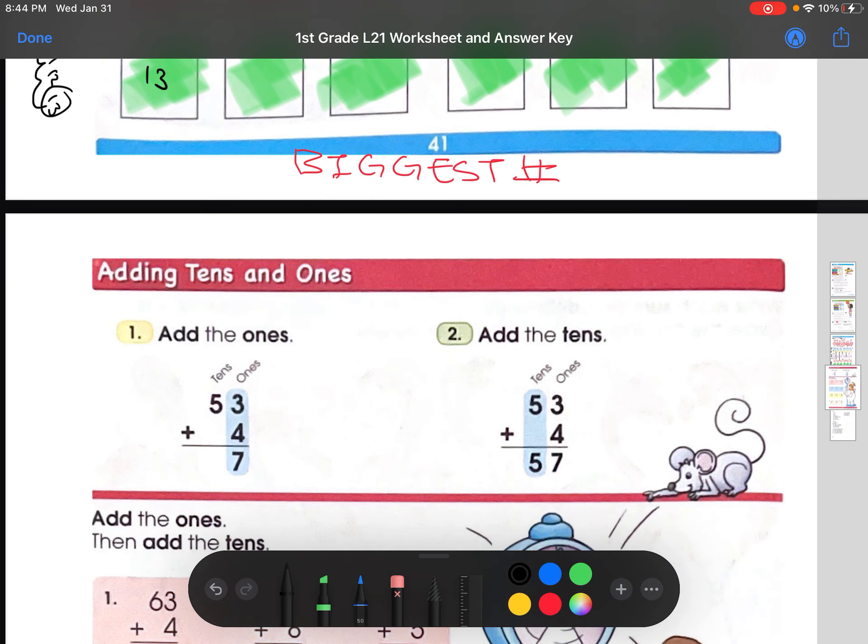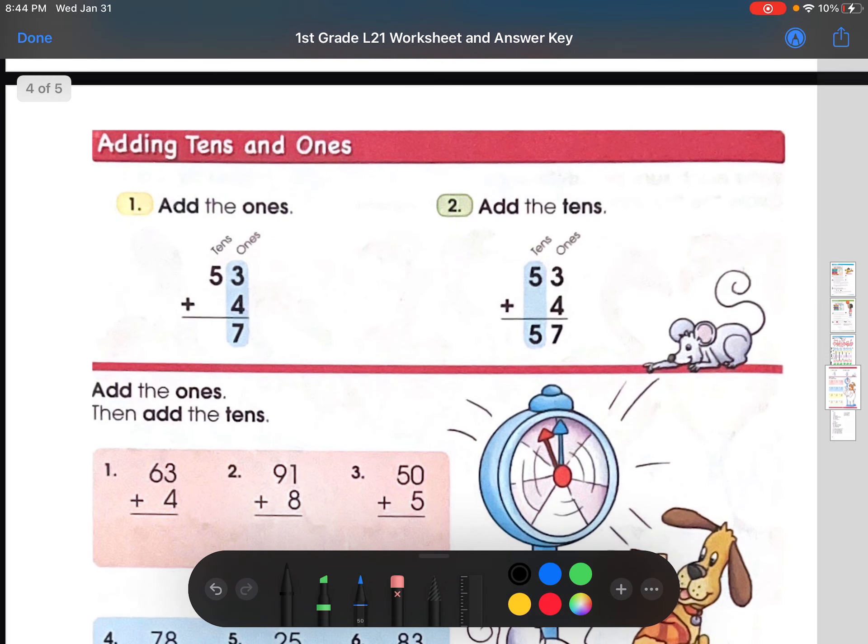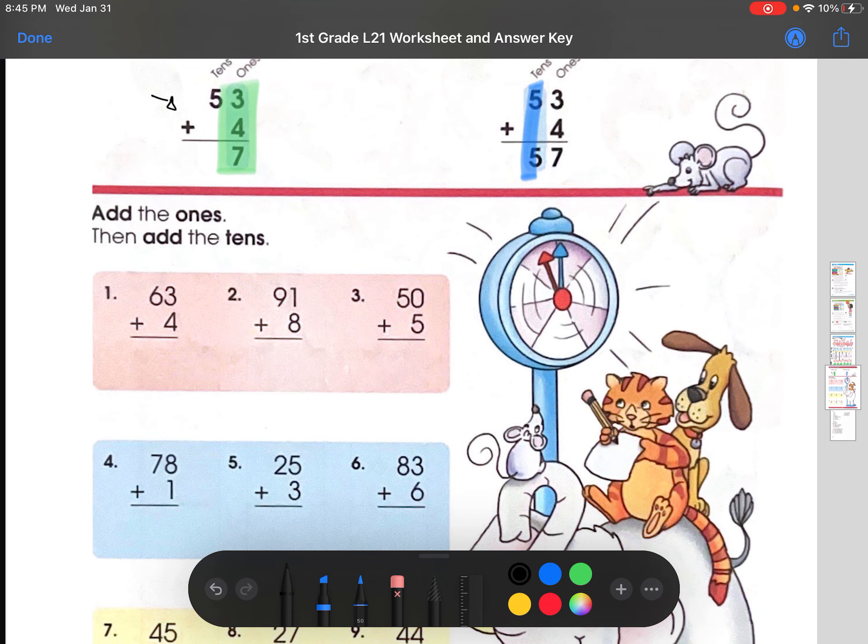To our last page. Adding tens and ones. So, if we look at the example real quick, when we're doing a bigger number, a double digit number, we would like to do it vertically. So, set the numbers on top of each other, just like this. And do the ones first, straight down. And then, do the tens next. So, you would take turns. If that makes sense. Let's do an example together.